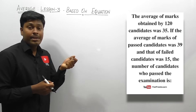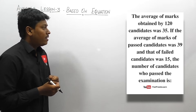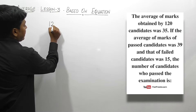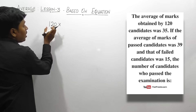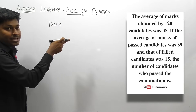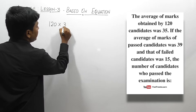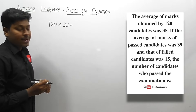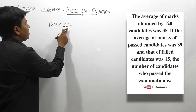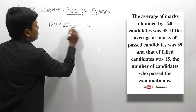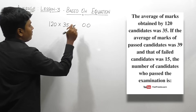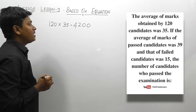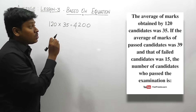First, we know that the total are 120 candidates and their average is 35. So 120 multiplied by 35 gives the total marks obtained by the 120 candidates. 120 into 35 equals 4200. So 4200 will be the total marks obtained by 120 candidates.